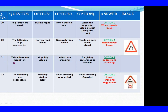Question 31: Zebra lines are meant for. Option 1: Stopping vehicles. Option 2: Pedestrian crossing. Option 3: Giving preference to vehicles. The right answer is Option 2: Pedestrian crossing. Question 32: The following sign represents. Option 1: Railway station near. Option 2: Level crossing unguarded. Option 3: Level crossing. The right answer is Option 2: Level crossing unguarded.